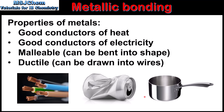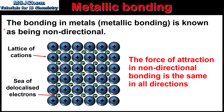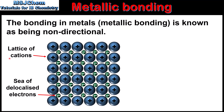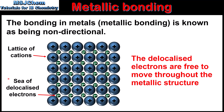Next we look at the structure of metals and the metallic bond. The bonding in metals, which is metallic bonding, is known as being non-directional. Non-directional bonding means that the force of attraction occurs in all directions. Here we can see a diagram of the metallic structure, which consists of a lattice of positive metal ions, or cations, and within the structure is the sea of delocalized electrons.